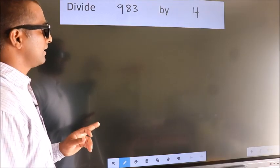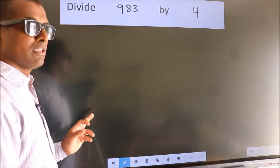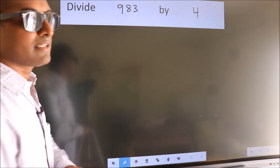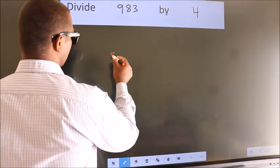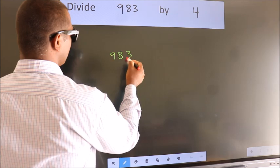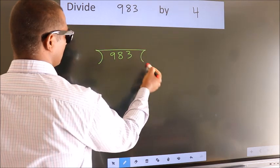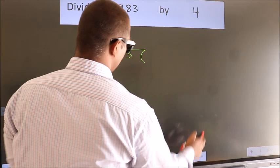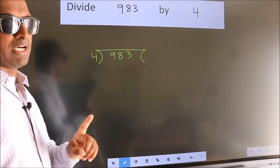Divide 983 by 4. To do this division, we should frame it in this way: 983 here, 4 here. This is step 1.